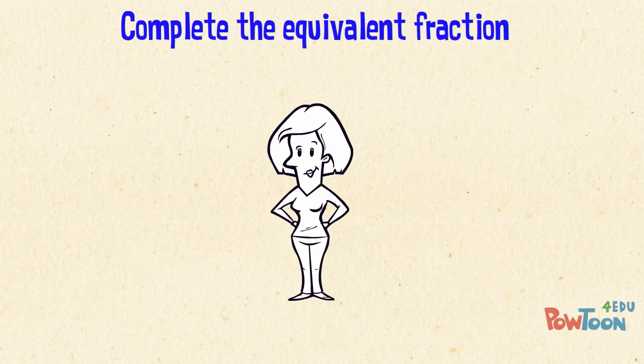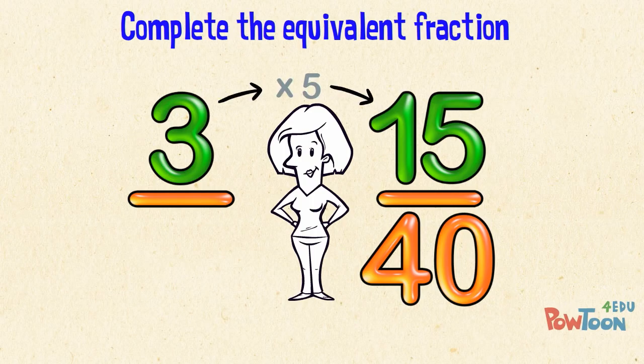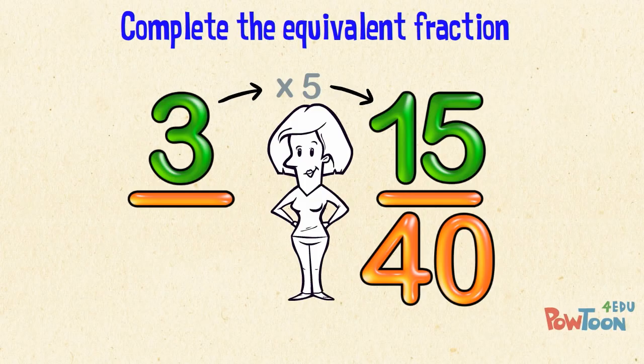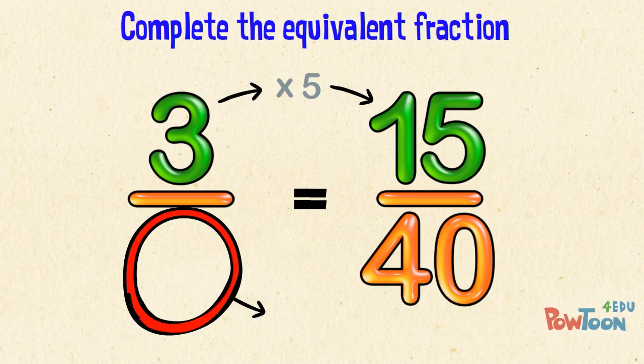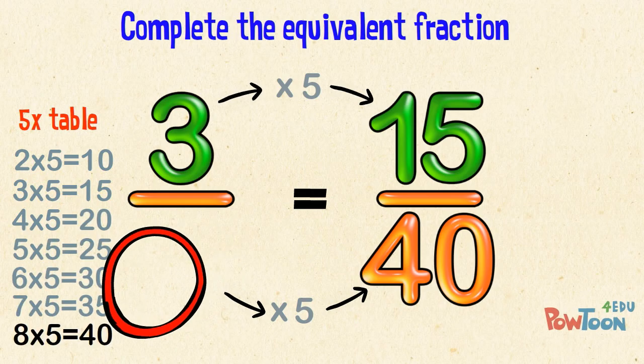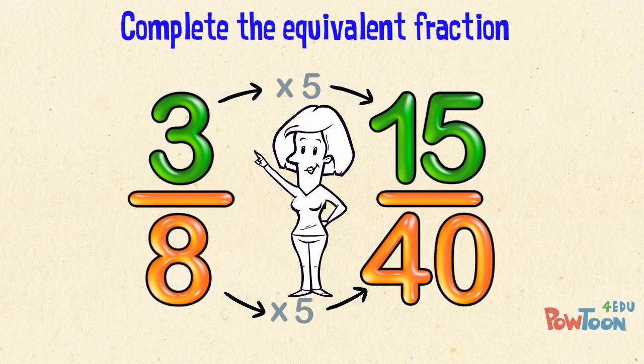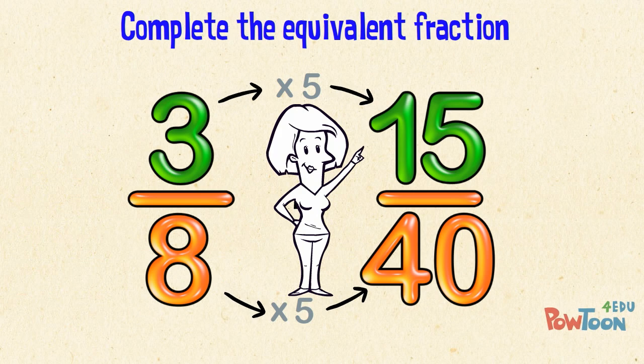With this pair of equivalent fractions we have both numerators and we know that 3 times 5 is 15. Whatever we do to the top we've got to do to the bottom. So something times 5 is 40. Think through the 5 times table till you get to the answer of 40 and you'll see that 8 times 5 is 40. So 8 is our missing denominator. We worked from the smaller number to the larger number. We multiplied.